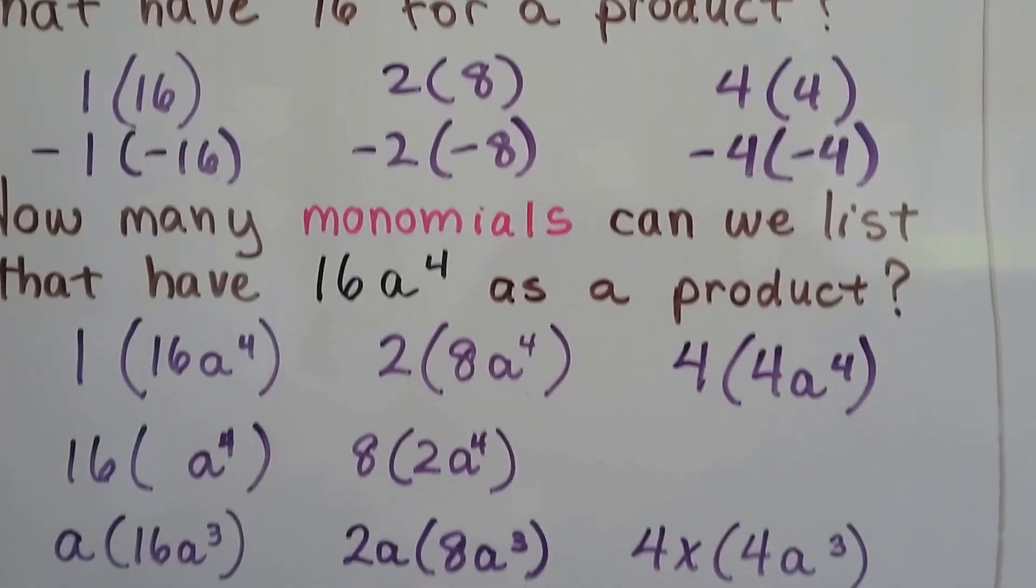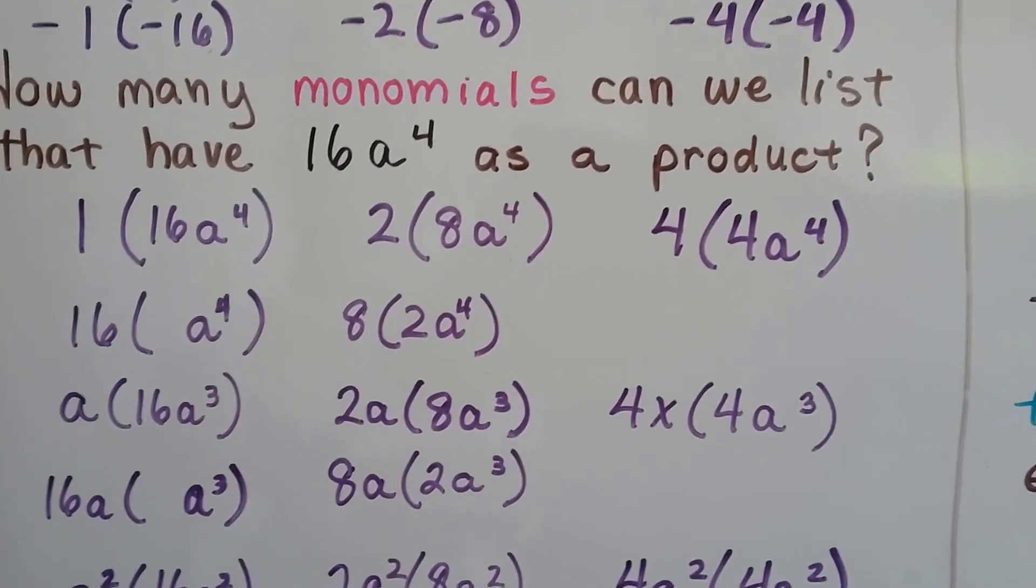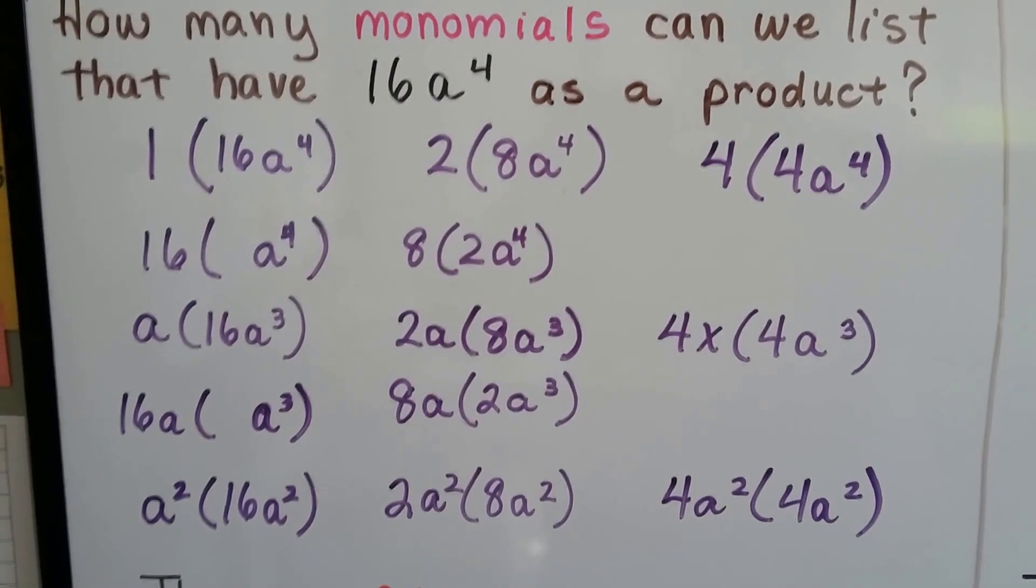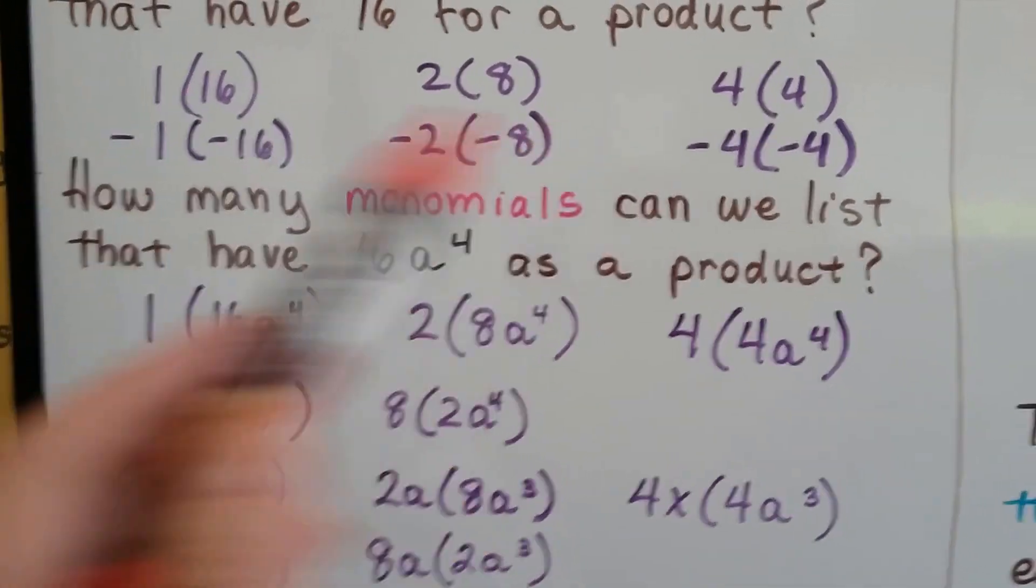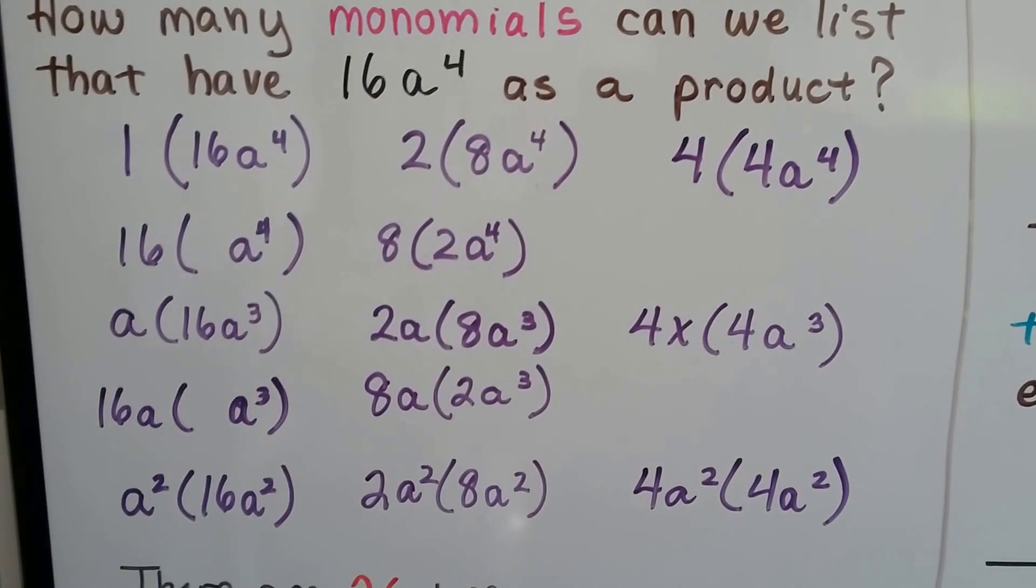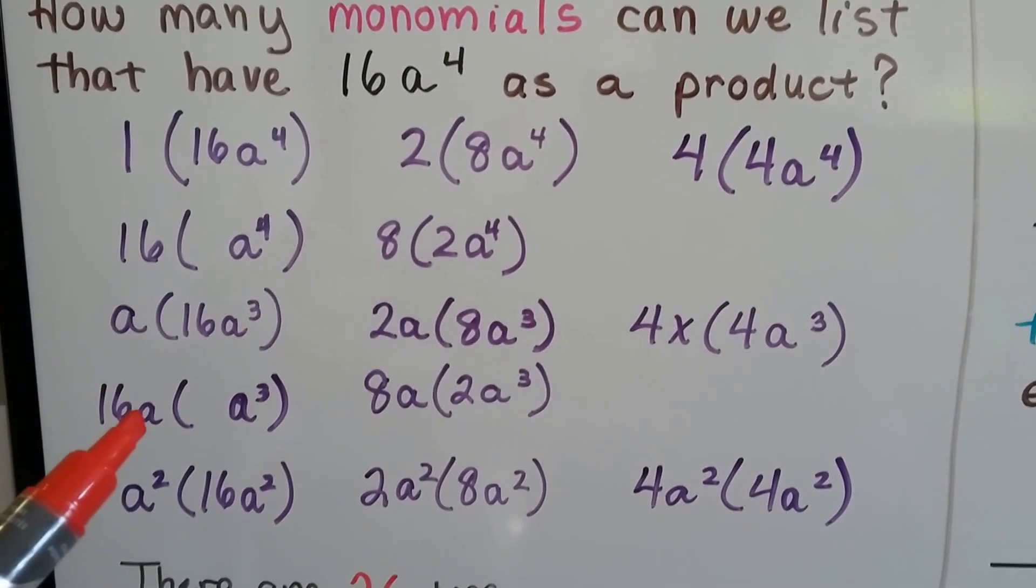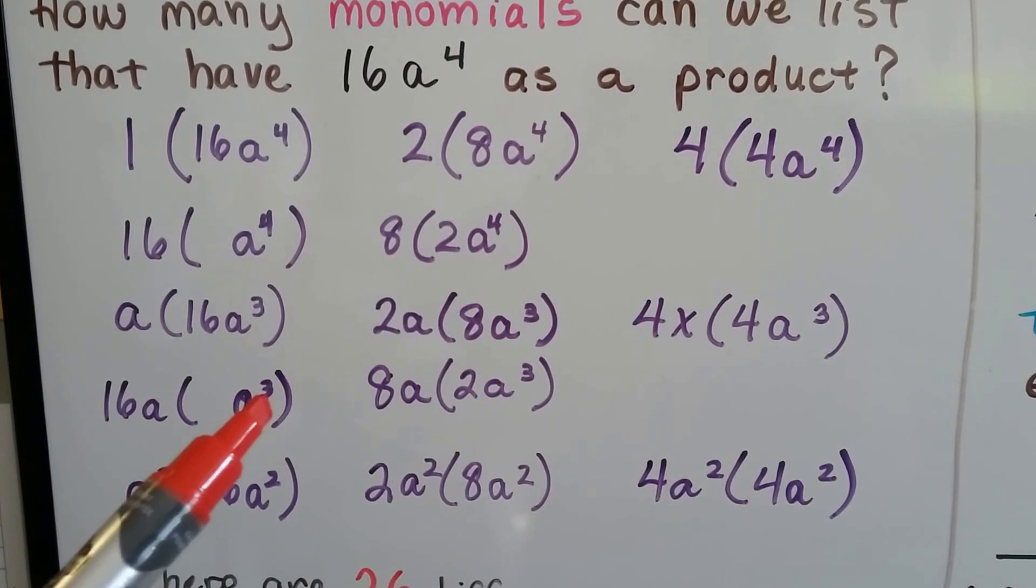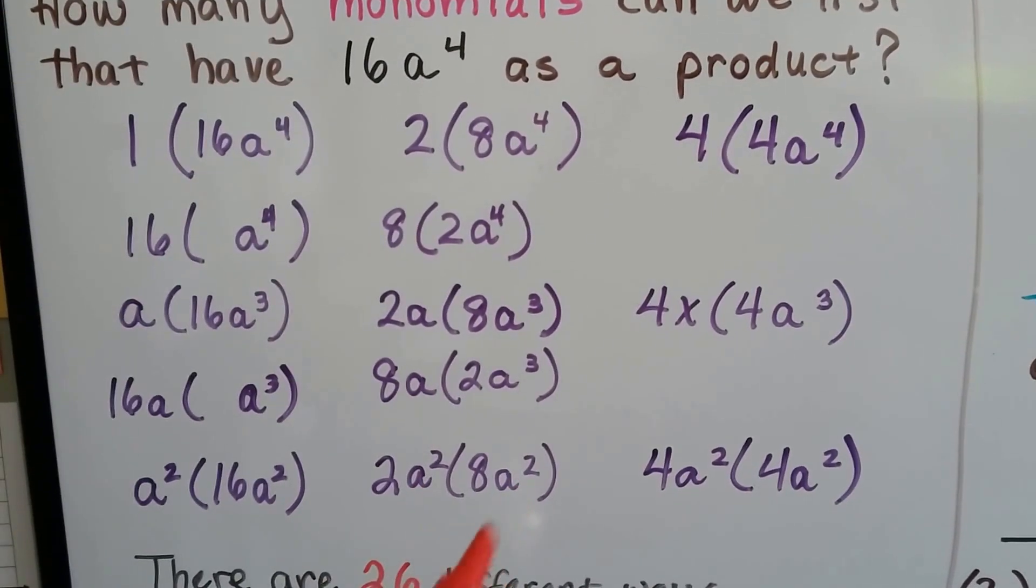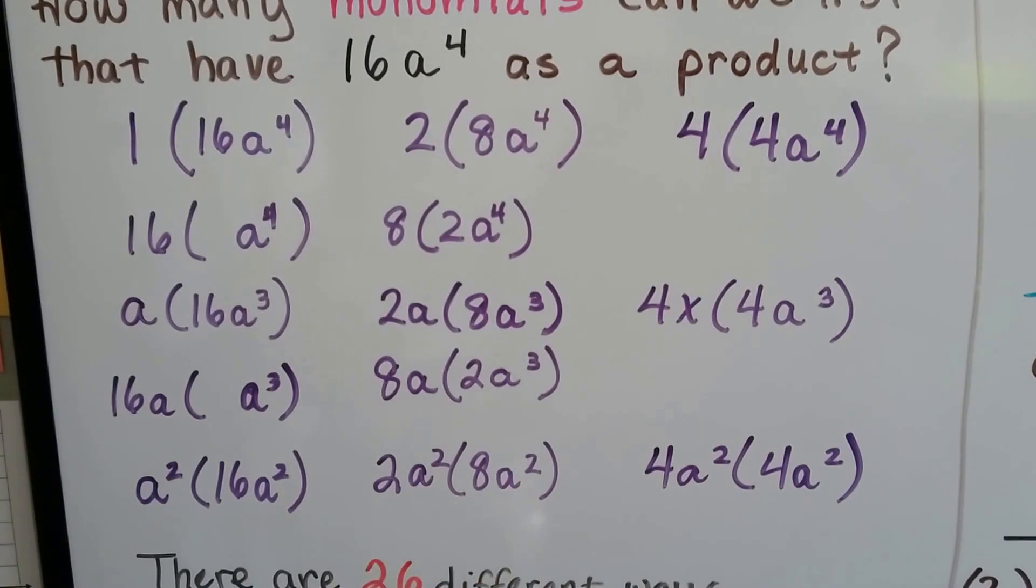We can do the same thing with monomials. How many monomials can we list that have 16a to the 4th power as a product? All of the ones that we did for 16 would work, wouldn't it? And because the product rule of exponents says that we can add exponents, we can break the exponents up to 1a and a to the 3rd power, or use an a to the 2nd power with an a to the 2nd power to make that a to the 4th power, couldn't we, with the 2 and the 8?